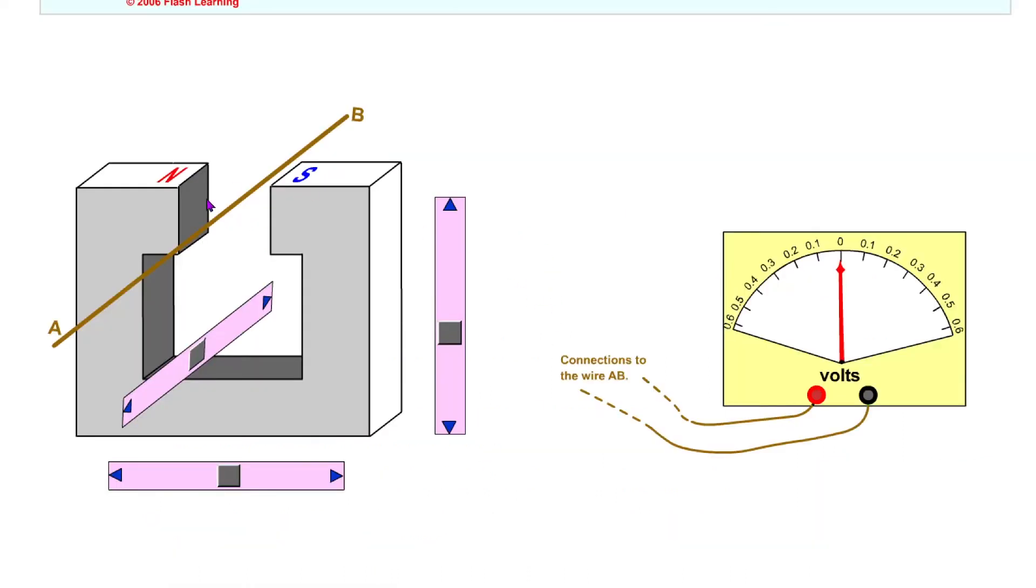So looking at this similar setup here, we've got our voltmeter and our horseshoe magnet with a wire lying in the magnetic field between the north and south poles. You'll notice that when the wire is stationary, we don't get any voltage or EMF produced on the voltmeter.